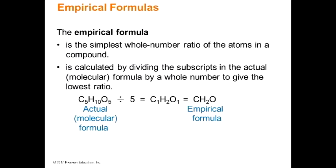The empirical formula is the simplest whole number ratio of atoms in a compound. We're not covering the full derivation in class — the textbook does an excellent step-by-step job of that. For C5H10O2, dividing by five gives the empirical formula CH2O — we don't write the ones unless for teaching. The molecular formula is five times the empirical formula; reduce it five times and you get the empirical.